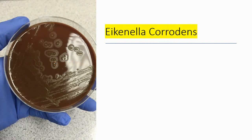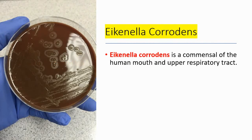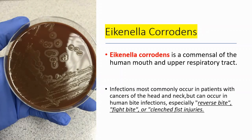Let's talk about Eikenella corrodens. It's a commensal of the human mouth and upper respiratory tract. Infections most commonly occur in patients with cancers of the head and neck, but can also occur in human bite infections — especially in reverse bite, fight bite, or clenched fist injuries. So this bacteria commonly causes the signs and symptoms that we see in human bites.